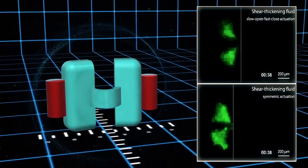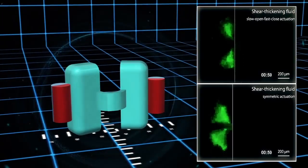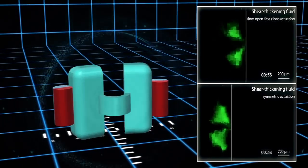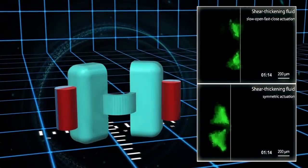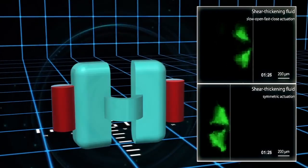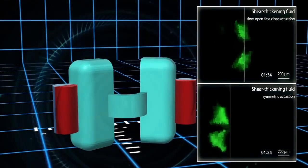You can see that during the rapid closing phase the scallop moves forward and then during the slow opening phase it moves backwards again, but because of the shear thickening properties it moves forward more during that forward stroke than it moves back during the backstroke. So the net result is that over many cycles the scallop moves forward.